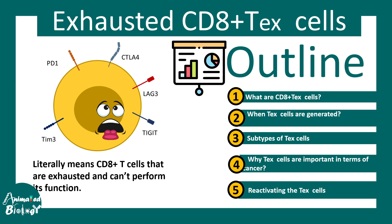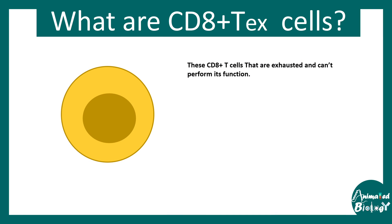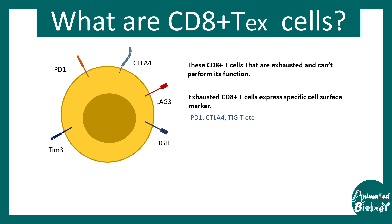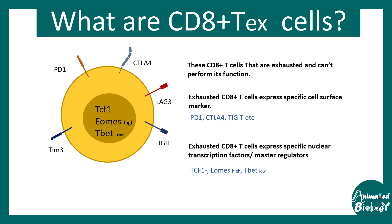These CD8-positive T cells are exhausted and have certain molecular markers on their surface as a unique signature. Especially, they have high levels of PD-1, CTLA-4, TIGIT, and others — all of which are inhibitory modulators of T cell activity. Exhausted T cells also express specific nuclear transcription factors; for example, TCF-1 negative, EOMES or TBR1 high, and T-BET low. This combination is the hallmark molecular signature of an exhausted T cell.